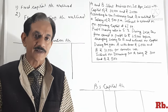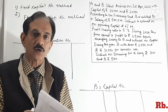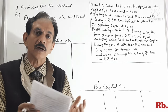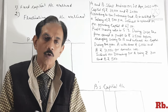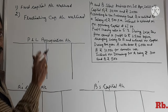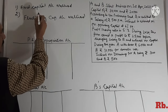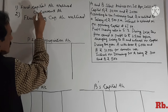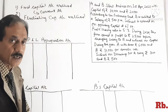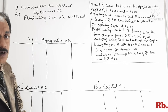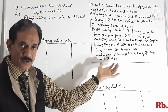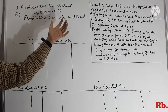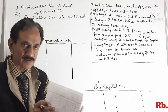Ab sawaal uthta hai: agar capital accounts ko hum ne fix rakha hai, to baaki transactions ko hum kahan dikhayenge — like interest on capital, interest on drawings, salary to a partner, commission to a partner, ya jo profit earn hua hai? Uski liye ek aur account manaya jata hai under this method — under Fixed Capital Account Method — that is called the Current Account. Current account ke andar hum other transactions ko dikhayenge. In sab baaton ko hum illustration ke beech mein samjhenge.